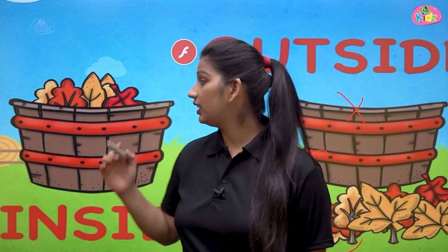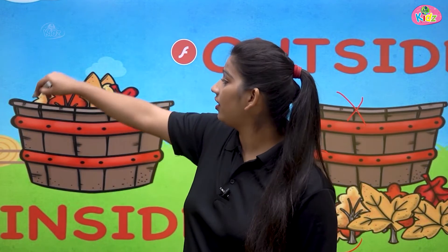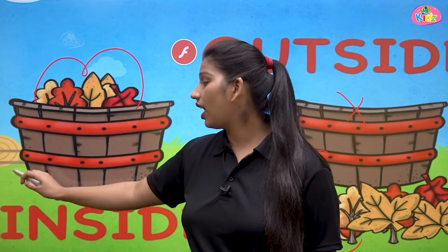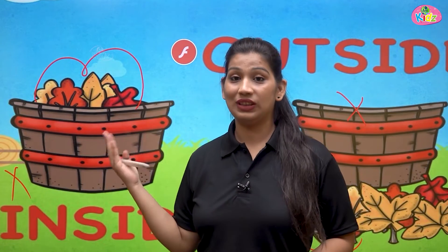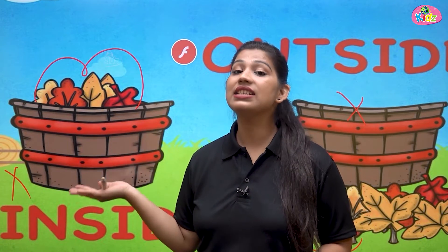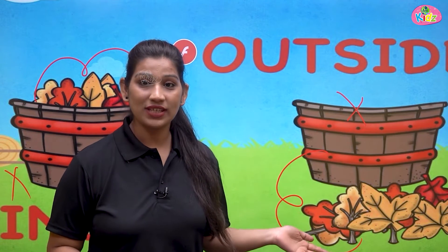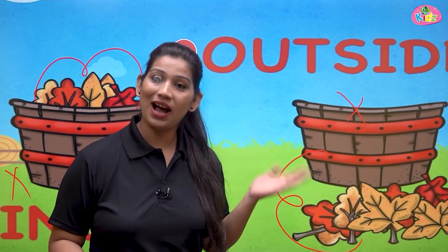Here the leaves are inside — you can't see the leaves are outside. So this is inside, andar. This is outside, bahar.